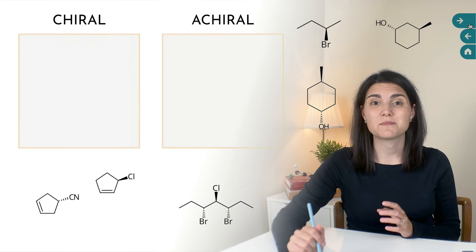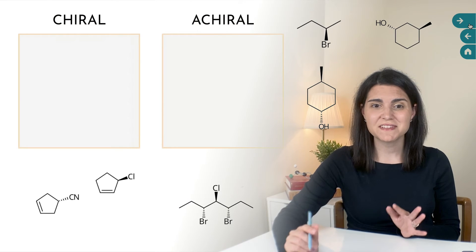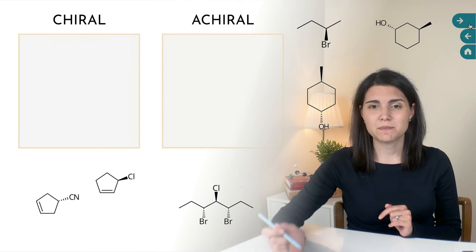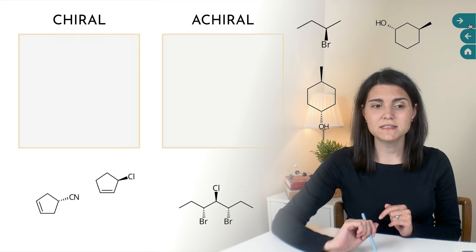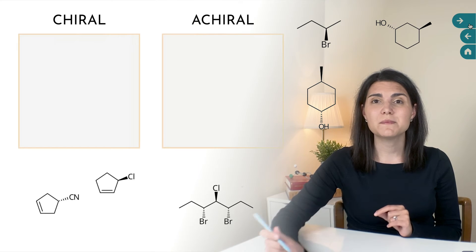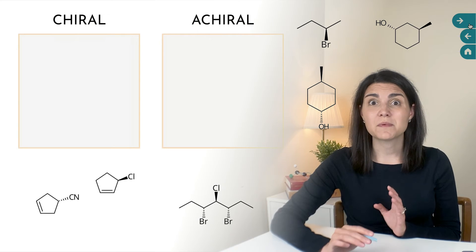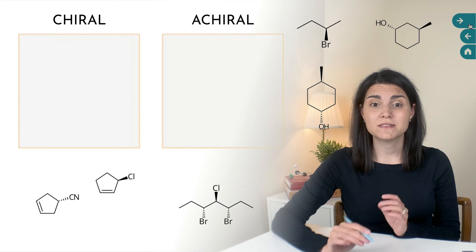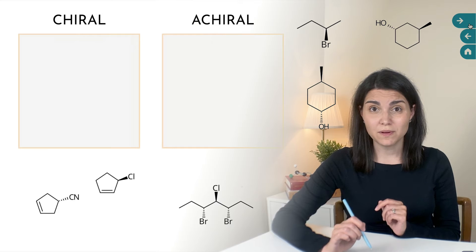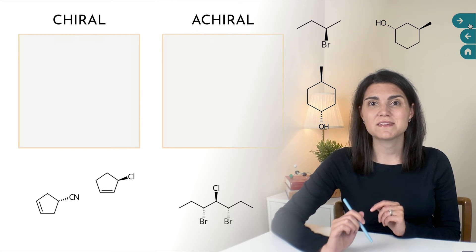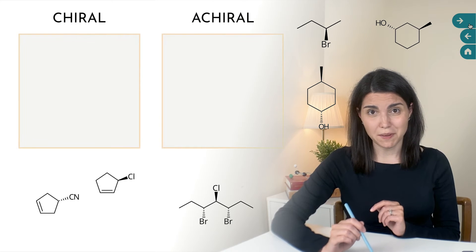So here's a practice problem there is a group of molecules on this slide and you need to decide whether each of them is chiral or achiral. If you're using my slides you can just pick them up and sort them into the boxes and if you've got your own piece of paper you can just redraw them and label them as chiral or achiral. And remember the easiest thing that you can do is to evaluate whether each molecule has a plane or center of symmetry. You can pause the video now to give this a try and I'll give this solution in just a minute.